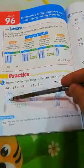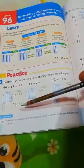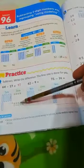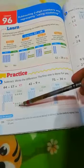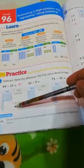So 1, 2, 3, 4 tens remained. And how many ones? 1, 2, 3, 4, 5, 6, 7. The answer is 47.